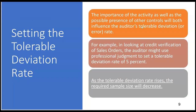For very significant controls the tolerable rate will be low, but for less important controls — or where there's a compensating control — the auditor can afford for the tolerable rate to be higher. For example, in looking at credit verification of sales orders, the auditor might use professional judgment to set a tolerable deviation rate of 5%. That means as long as the control is being done properly 95% of the time, the auditor is satisfied. As the tolerable deviation rate rises, the required sample size will decrease. As the tolerable deviation rate falls, the required sample size must increase.